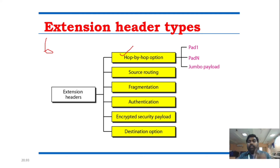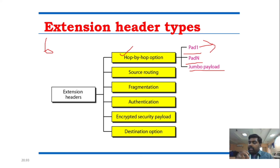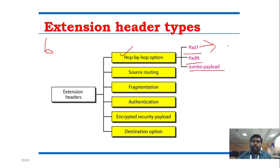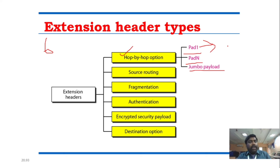In the hop-by-hop option, there are three fields: Pad 1, Pad N, and Jumbo field. Pad 1 and Pad N are used for alignment purposes — they are one-bit or multi-byte padding fields. The Jumbo field allows you to send jumbo-sized payload data that is larger than the normal limit.